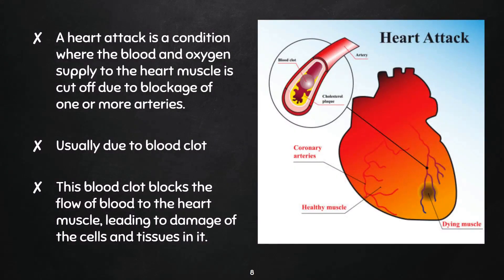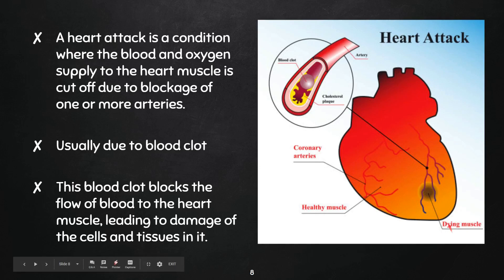Looking at this picture of the heart, you can see arteries on the front that supply blood to the heart muscle. There are three different arteries with various branches supplying the heart muscle. Unfortunately, these arteries can become filled with cholesterol or fat deposits. As the arteries get more and more narrowed, a blood clot can form within them, and when a clot completely cuts off the blood supply to a segment of the heart muscle, this leads to what is called a heart attack.